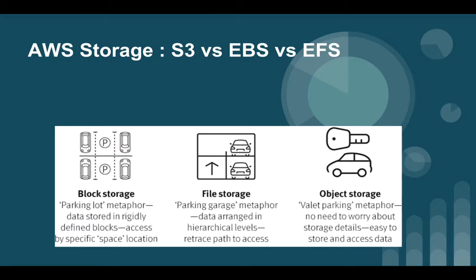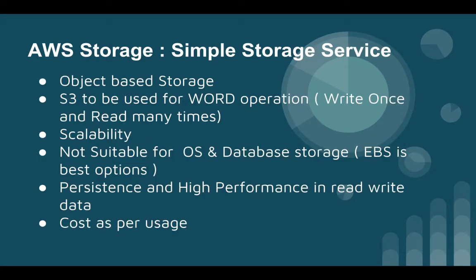Amazon provides all three types of storage. The first one is S3, Simple Storage Service — it's an object based storage. Amazon says it's a safe place to store your files based on objects. In object level storage you cannot store your OS or database; for OS and database, block storage is the best option. S3 is best used for write once and read many times. If your use case requires retrieving data multiple times, S3 is the best option.